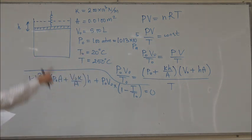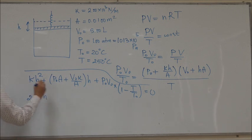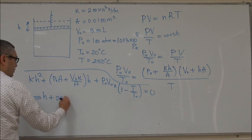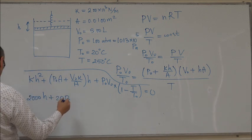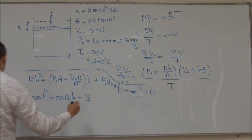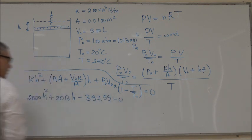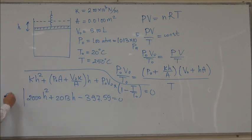When you substitute the numbers, the quadratic equation will look like this: 2000H² plus 2013H minus 397.59 equals 0. I'm keeping more significant figures than needed because this is an intermediate step. Then you can solve this quadratic equation for H.